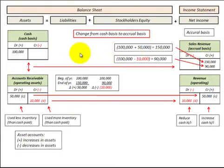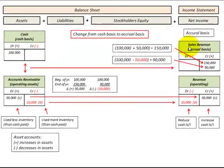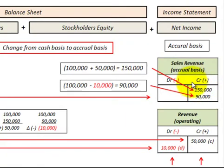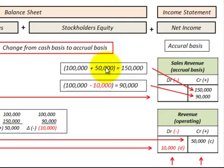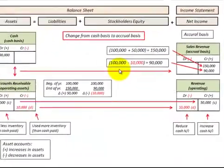The simplest way to determine accrual basis sales revenue is using debit and credit balances. We have a debit of $50,000 in accounts receivable and a debit of $100,000 in cash received. We need a crediting balance in sales revenue — $100,000 in cash plus $50,000 in accounts receivable — giving us accrual sales revenue of $150,000.